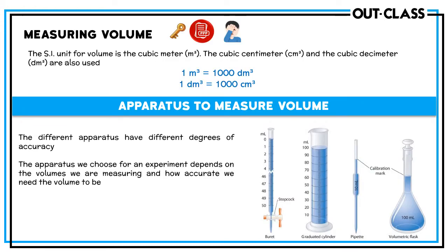Next is volume — this is a very important measurement that comes up often in papers. The SI unit for volume is cubic meter (m³), which equals 1000 dm³, and 1 dm³ equals 1000 cm³. Most commonly we measure volume in cubic centimeters — in titrations and making solutions. In moles calculations, the most commonly used unit is cubic decimeter (dm³). If volume is given in cm³, we convert it to dm³ by dividing by 1000.